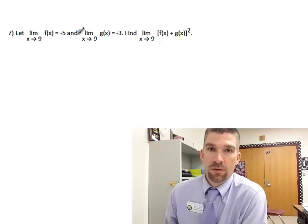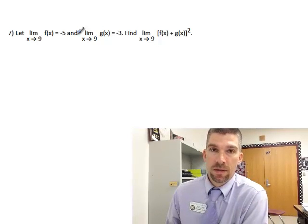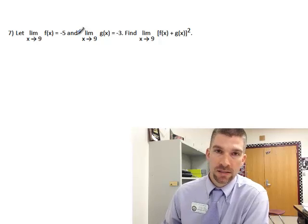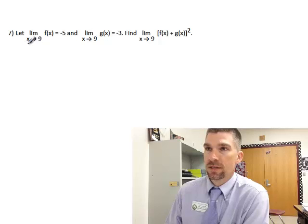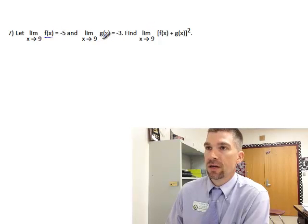Here's a problem that deals with several different properties of limits and makes us think about how those properties work. They give us all of these limits as x approaches 9. Basically, we have an f(x) function and a g(x) function.